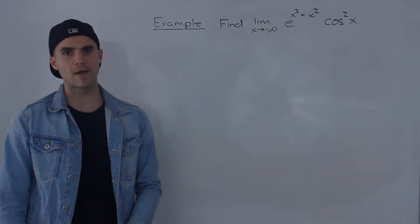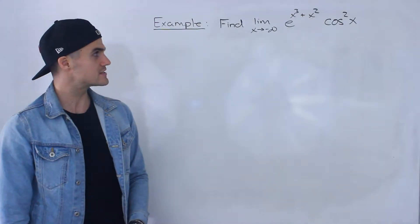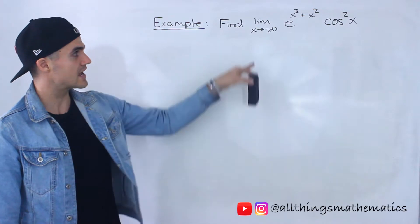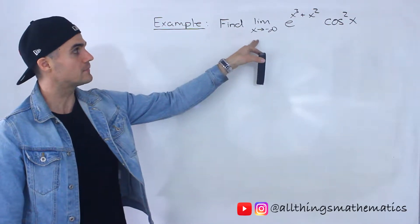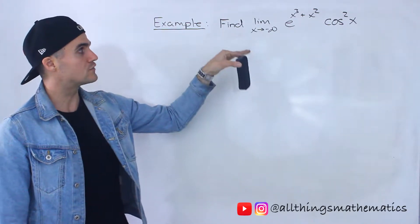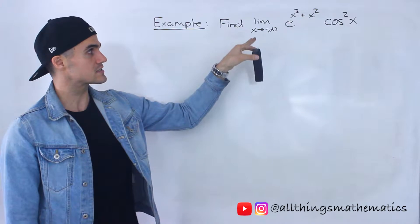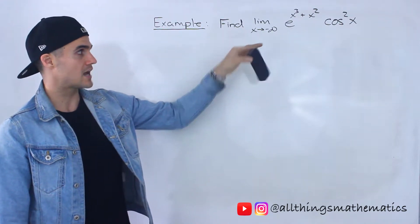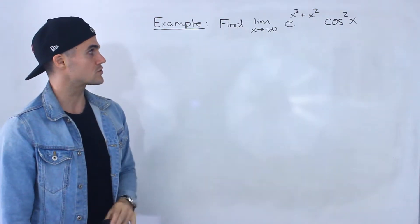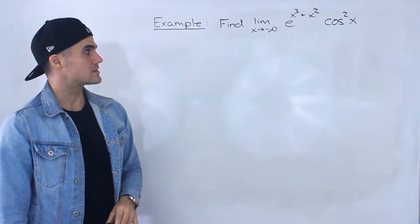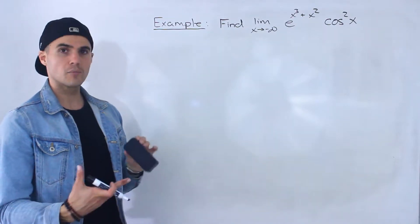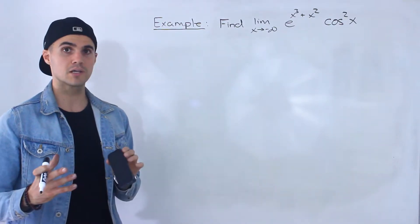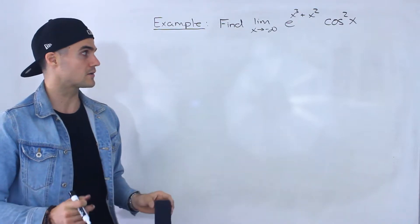Hey, what's going on guys? Welcome back. Patrick here. Moving on to the next example, we need to find this limit as x approaches negative infinity of e to the power of x cubed plus x squared times cos squared x. It's a fairly complex function, and we're actually going to be applying the squeeze theorem.